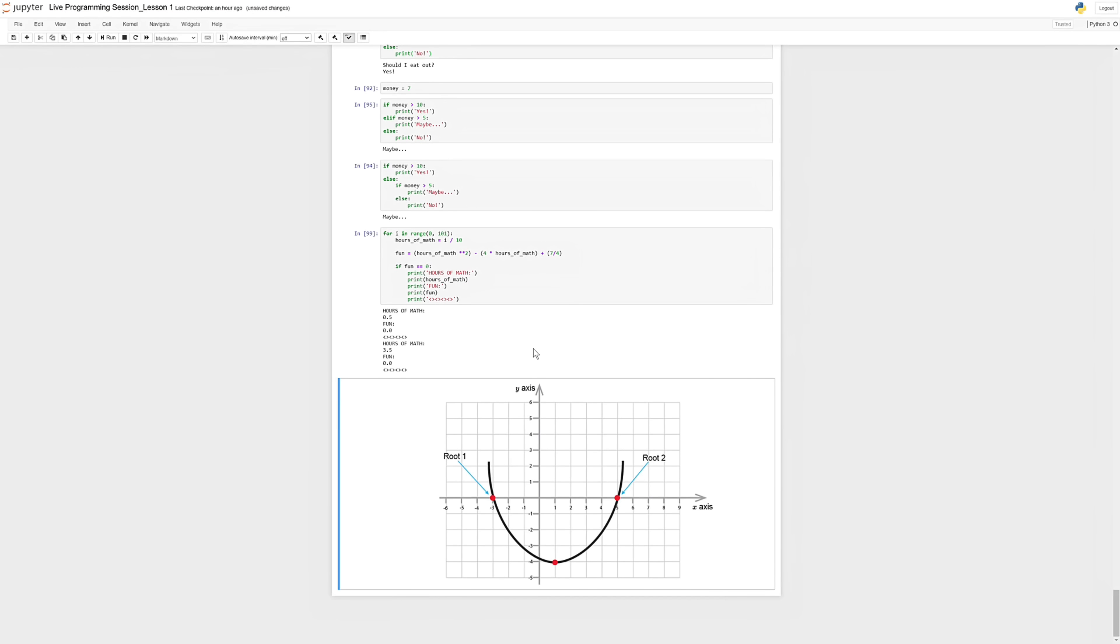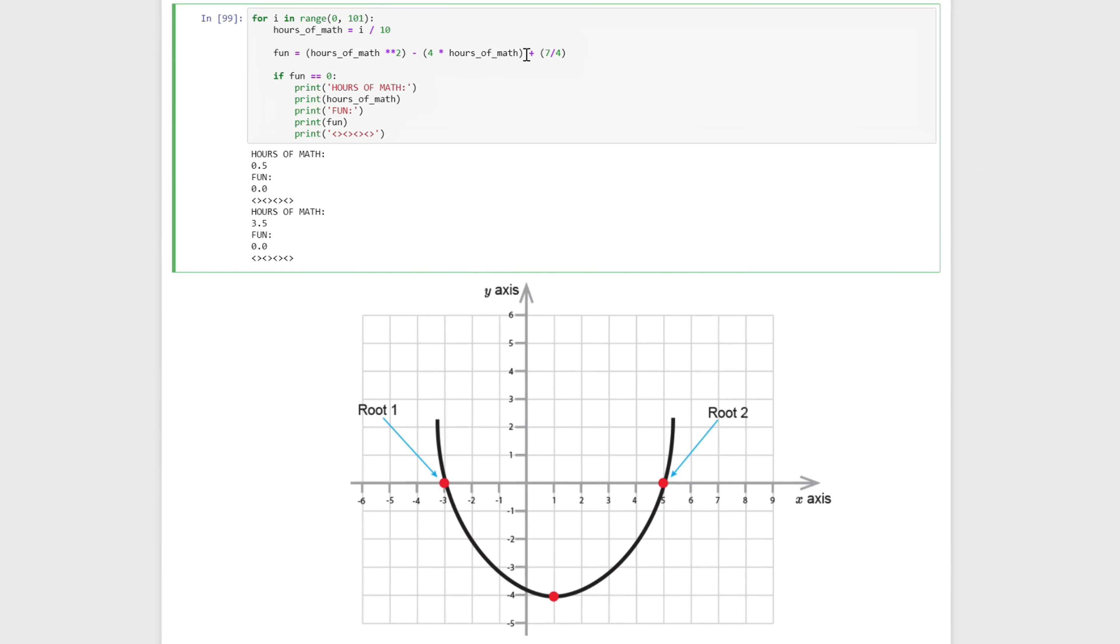Hi everyone. So in the last video, we were able to actually solve for the two roots of this quadratic equation here. And we did this by iterating through all these values between 0 and 100, dividing it by 10, and plugging it in until we found the values that made this 0. And those were the roots.